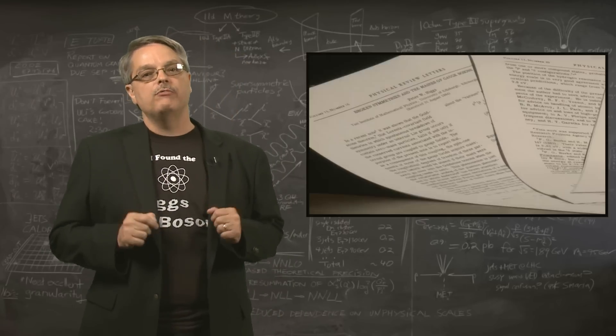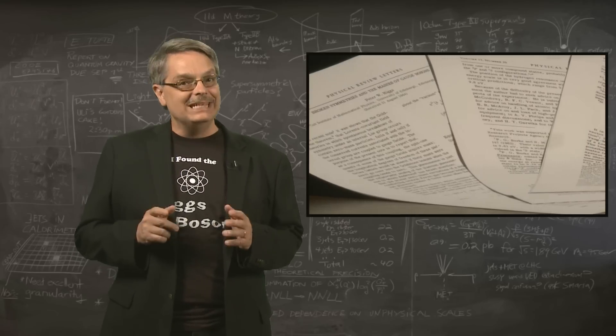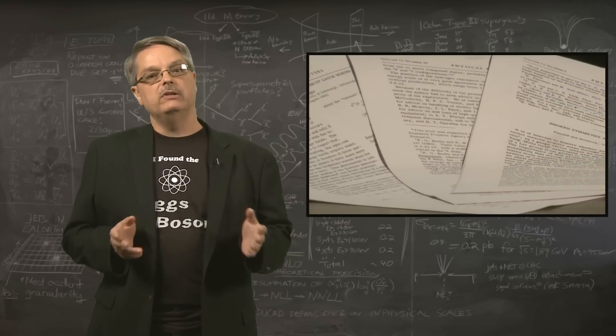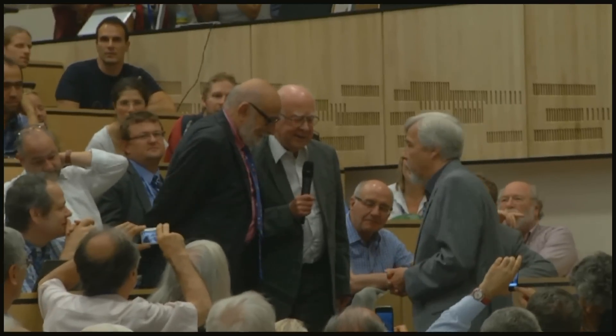In 1964, three scientific papers written by six different physicists proposed a previously unsuspected energy field in the universe. While he was not the only keen mind who had the idea, this new energy field is now called the Higgs field, after Dr. Peter Higgs.